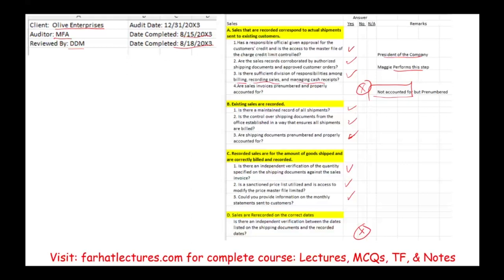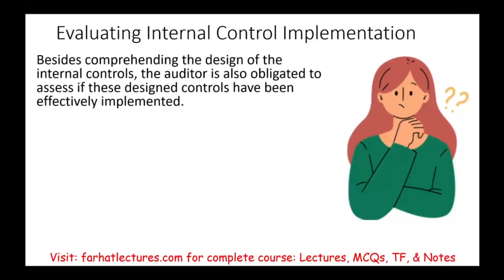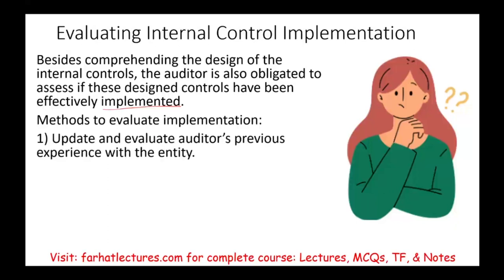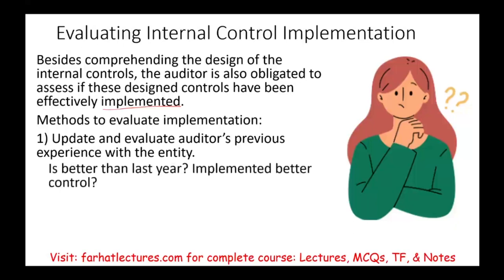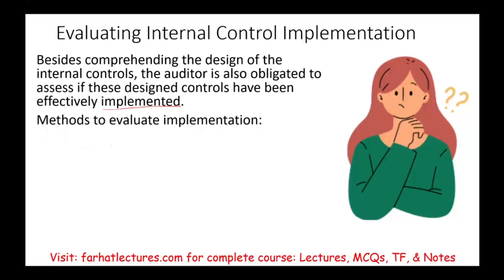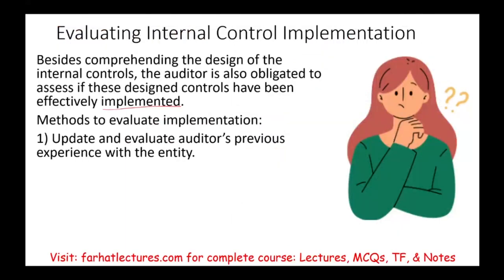If the controls are really being followed, then their internal control is designed properly. But this is just the design — we are learning about it. After learning, we must evaluate whether the designed controls have been effectively implemented. There are four methods. First, update and evaluate the auditor's prior experience with the entity — if this is a second or multi-year audit, review the prior year's internal control findings and check whether deficiencies were corrected.